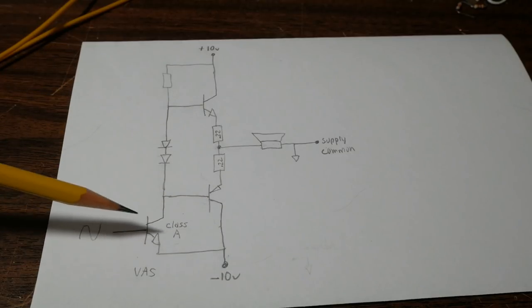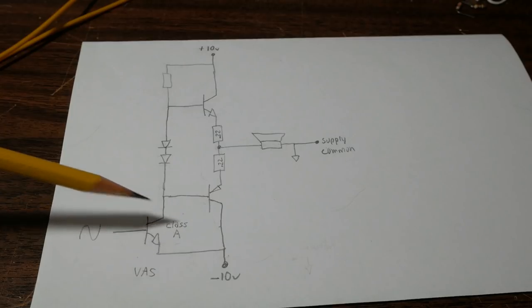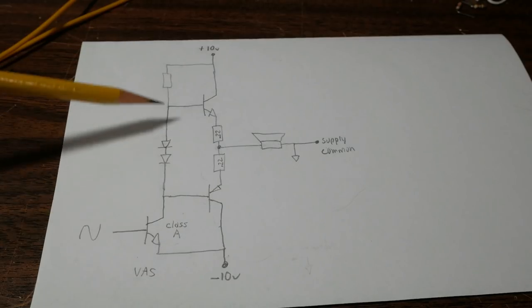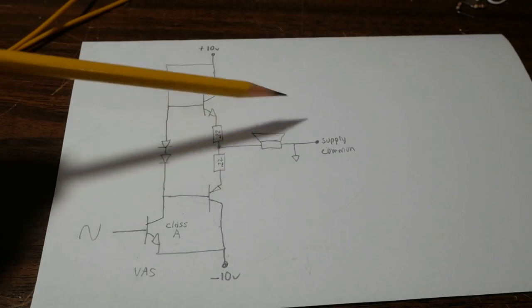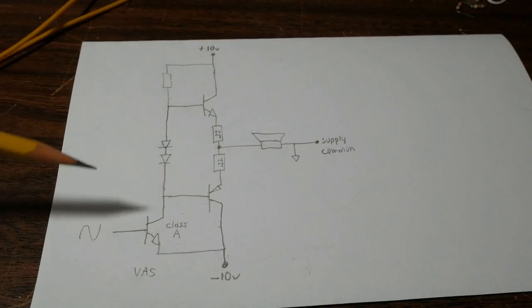And this transistor down here is a driven element. It's operated in class A and provides additional voltage gain. This stage of the amplifier must provide enough current to the output stage so we get the maximum current we need to drive our load.